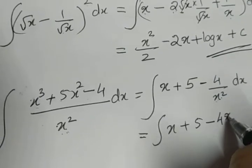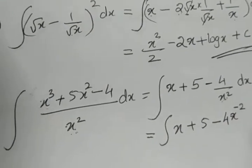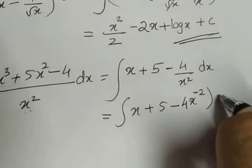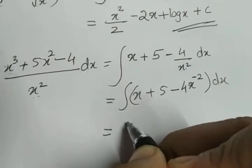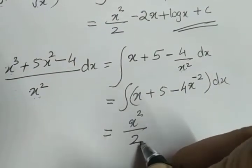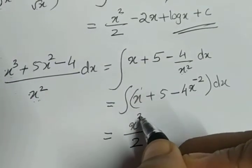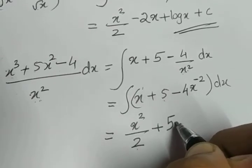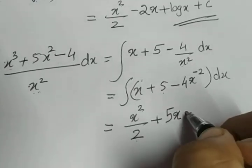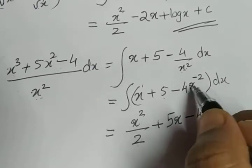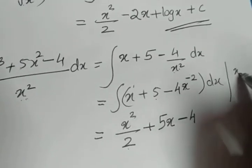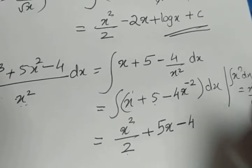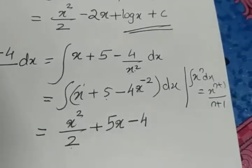So this equals integral of (x + 5 - 4/x²) dx. To bring x² from the denominator to the numerator, we write it as x^(-2), since a positive power in the denominator becomes negative in the numerator. Now integrating term by term: integral of x is x²/2. 5 is a constant, so its integral is 5x. For -4x^(-2), we apply the formula x^n → x^(n+1)/(n+1).